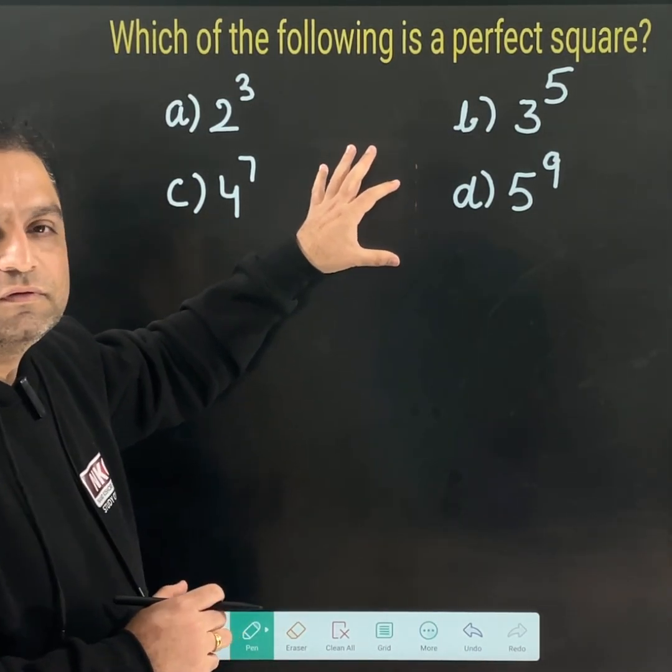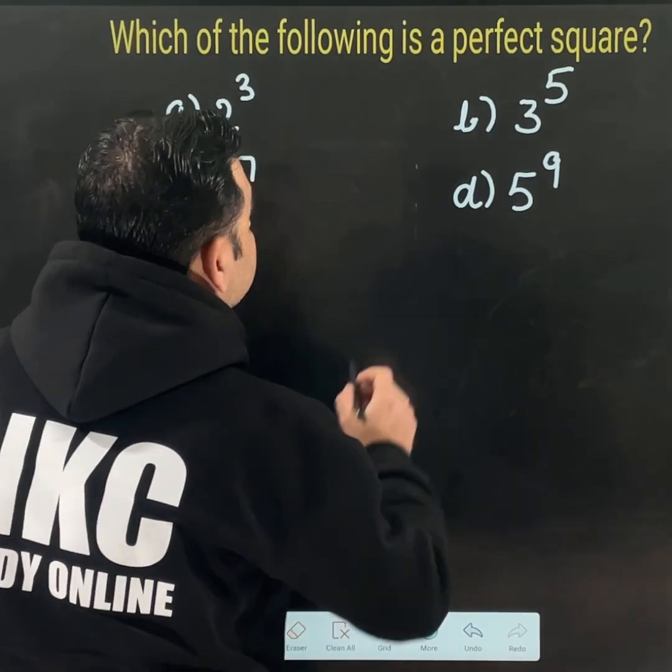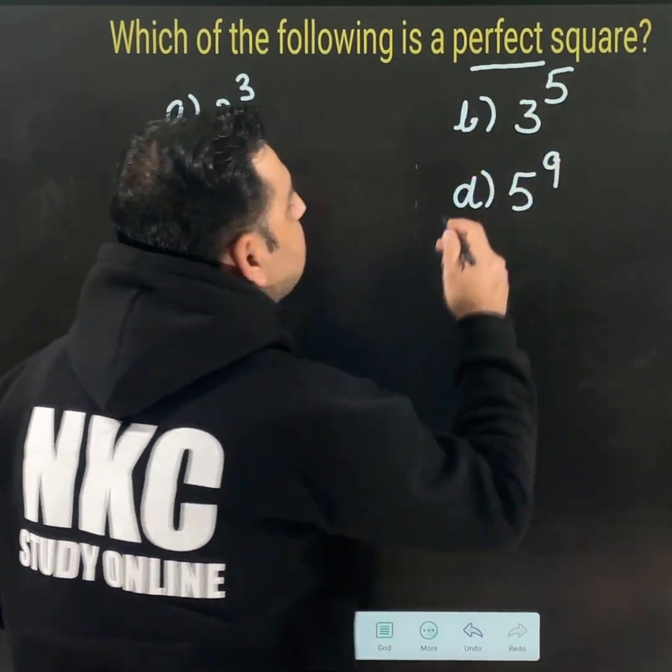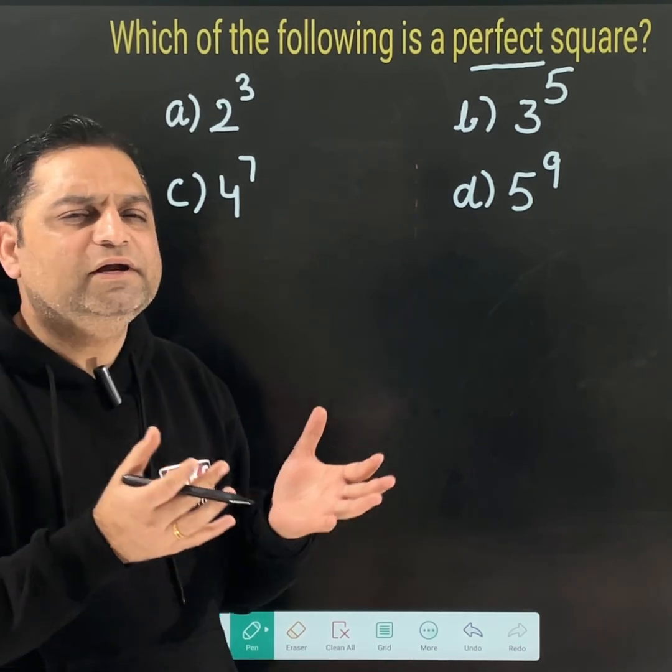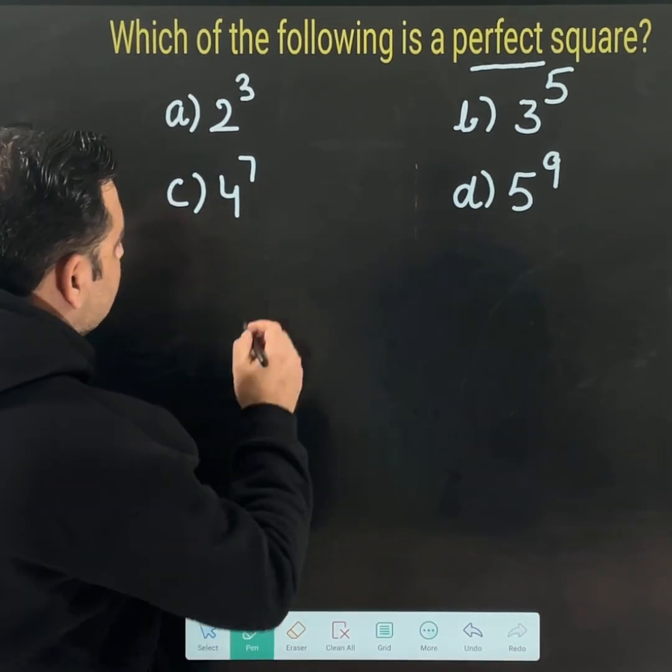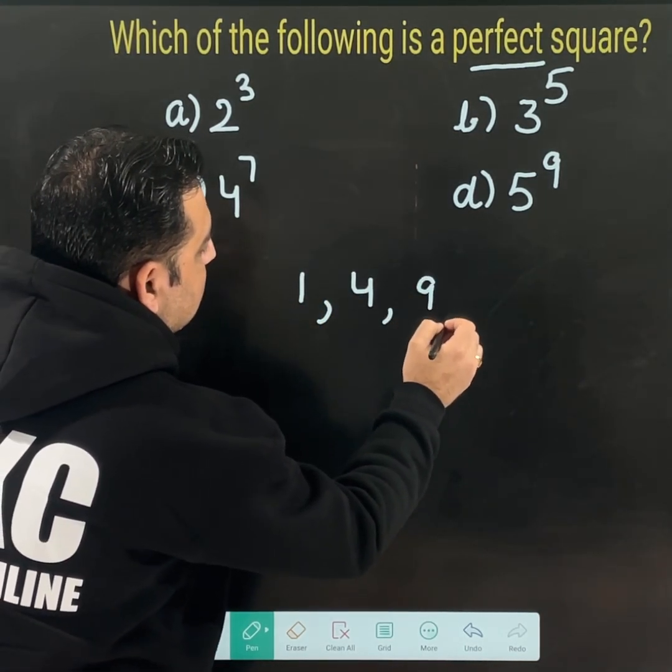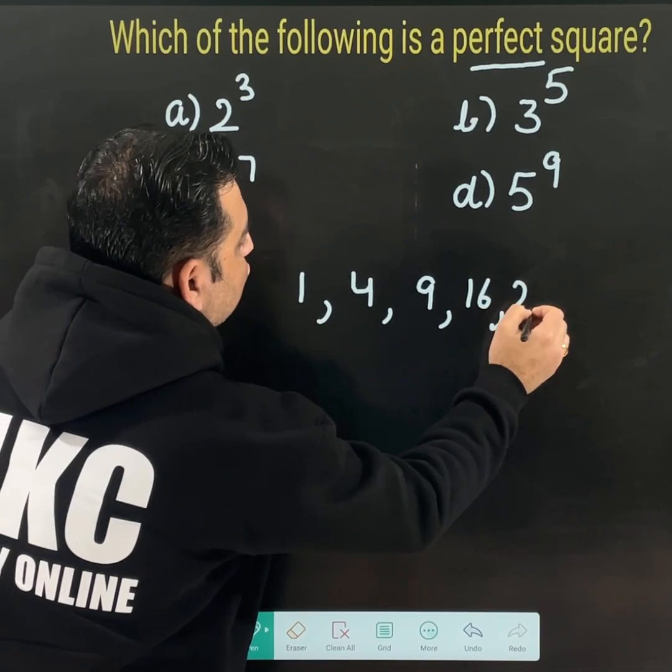First of all, before going with the exact option, let me clarify the meaning of perfect square because many of you watching the video might not be clear about it. So perfect squares are like 1, 4, 9, 16, 25.